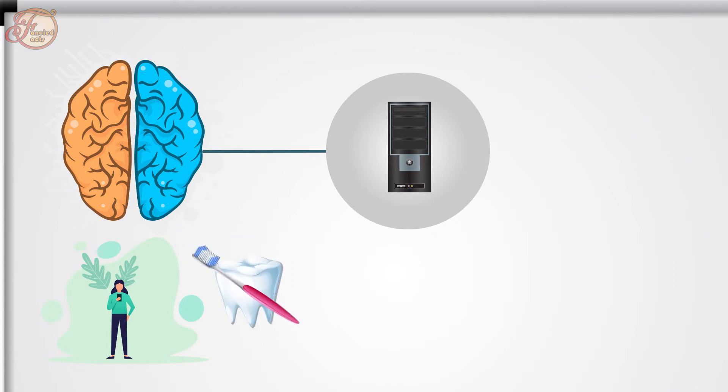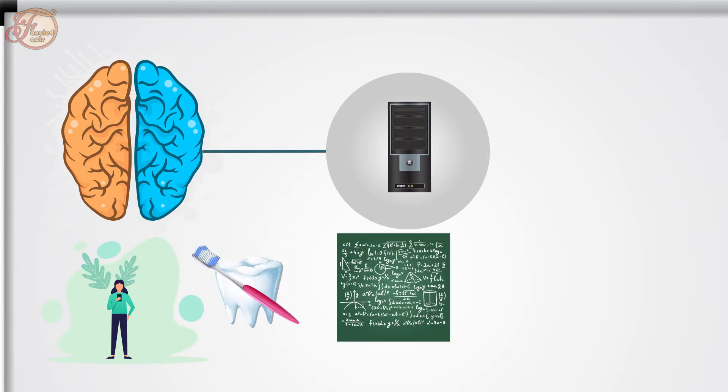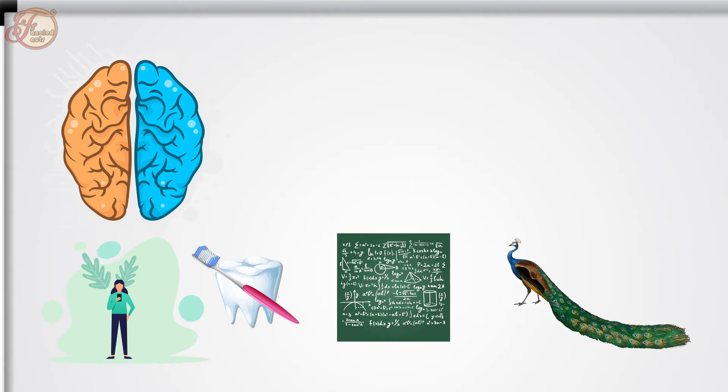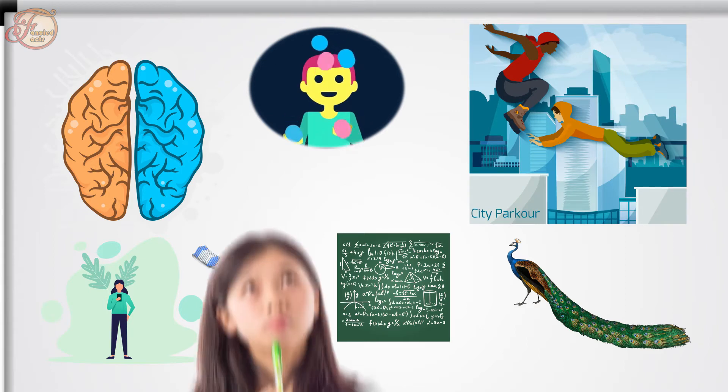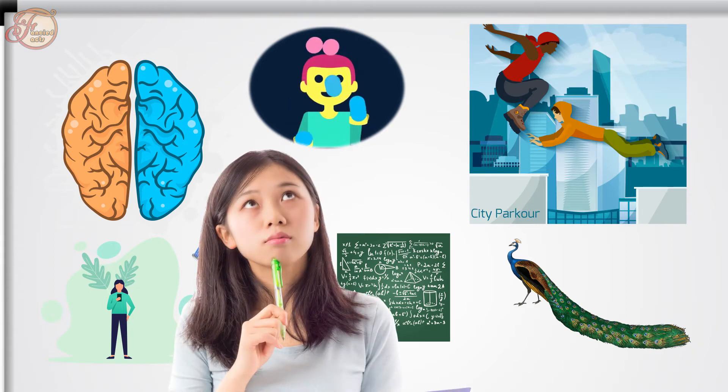Our brain is indeed a fantastic organ that holds a massive amount of data. It processes a range of information, such as reading the latest news on your mobile phone, brushing your teeth, doing complicated tasks such as solving a mathematical equation, drawing a beautiful portrait, or engaging in remarkable physical stunts like juggling or parkour. All of these activities require us to have a memory that holds data and retrieve it whenever we want.